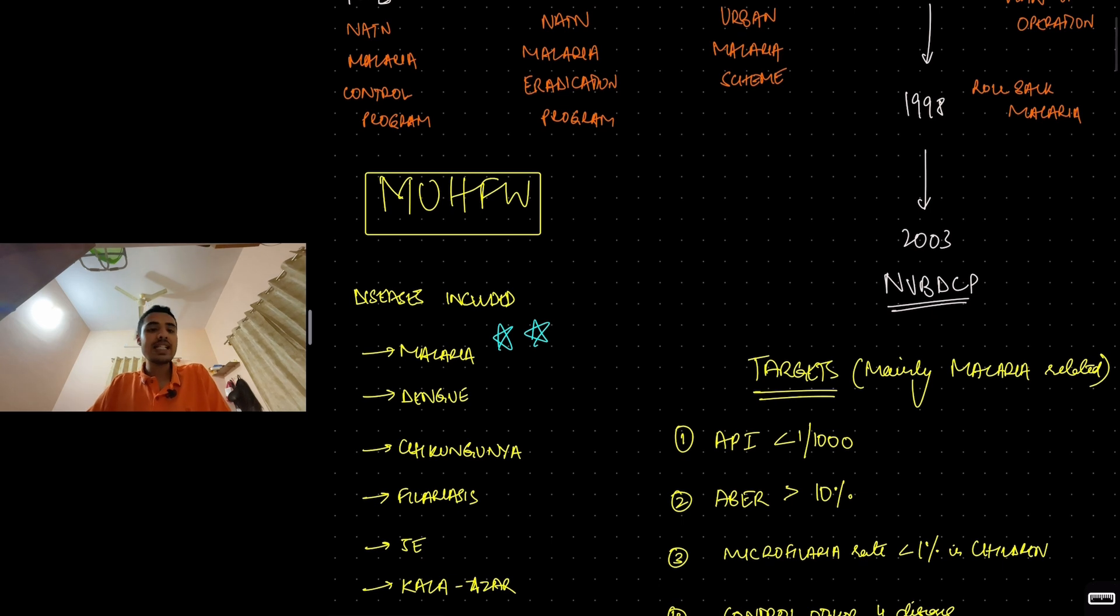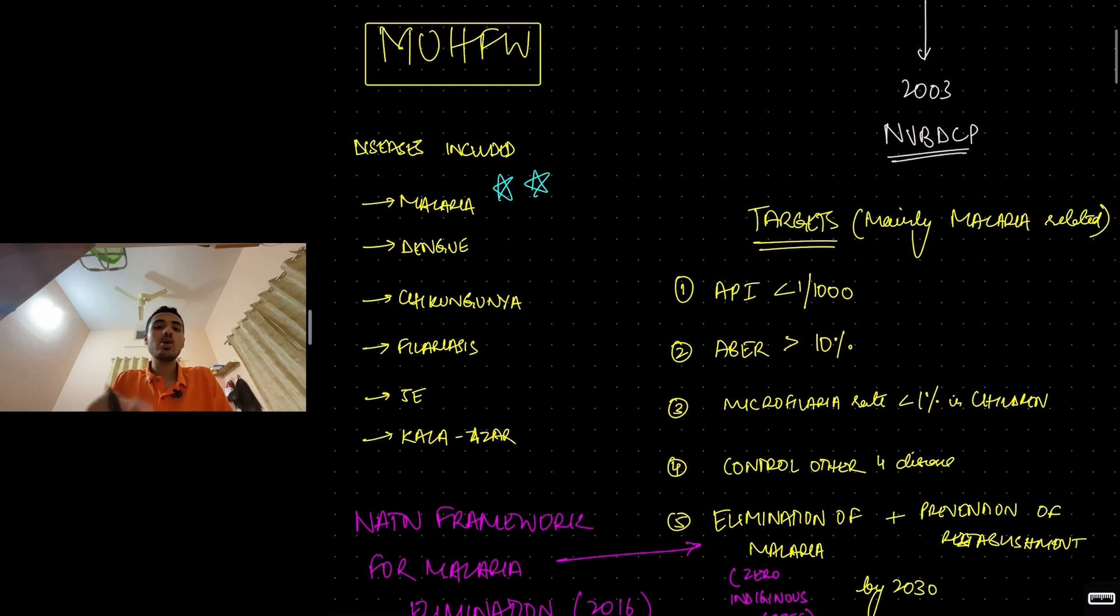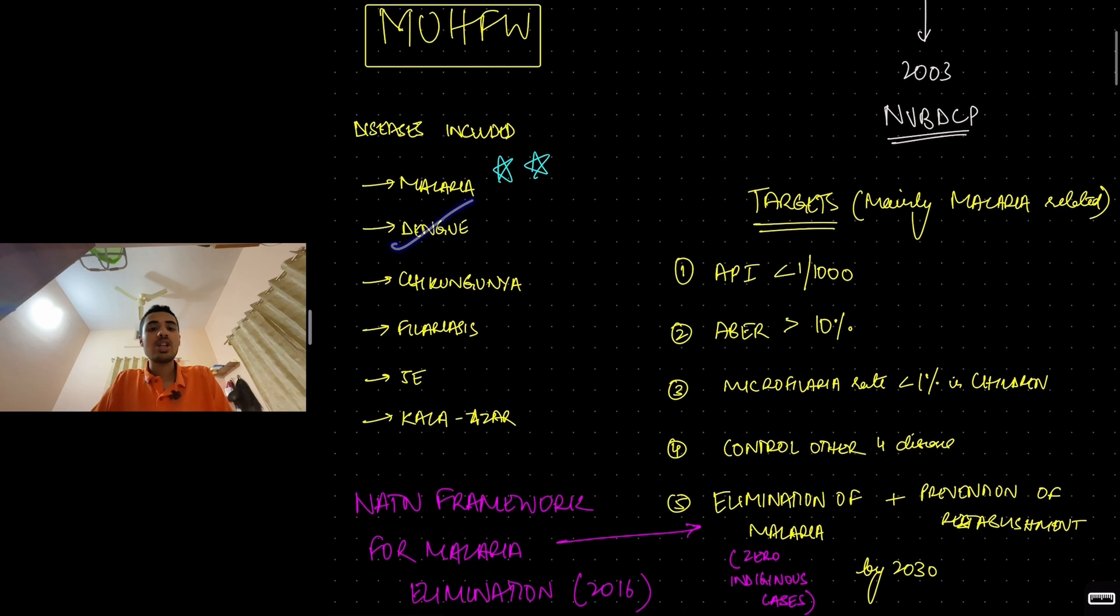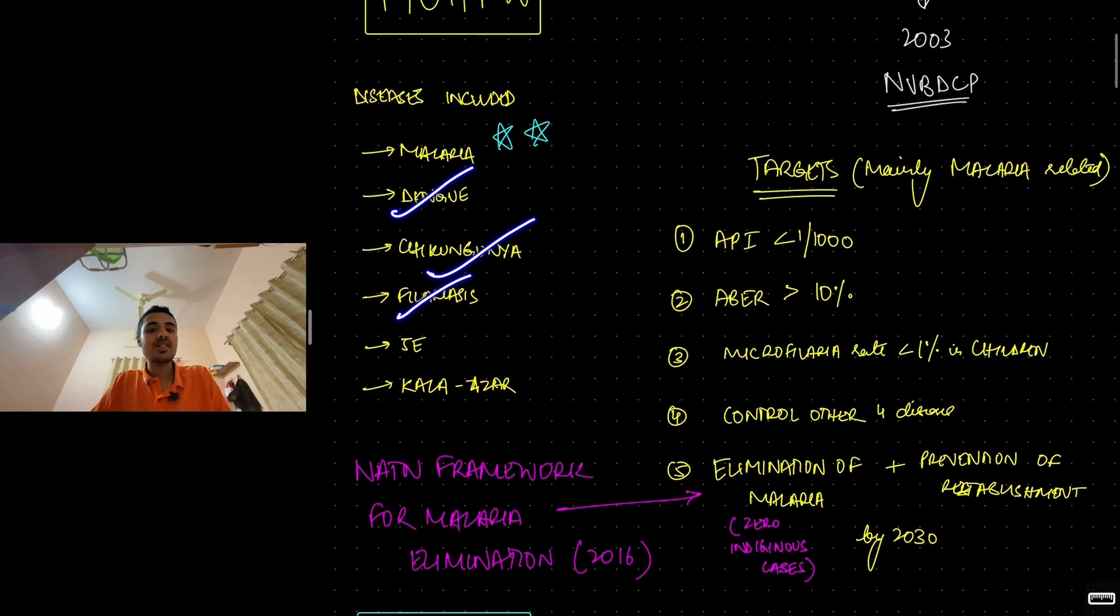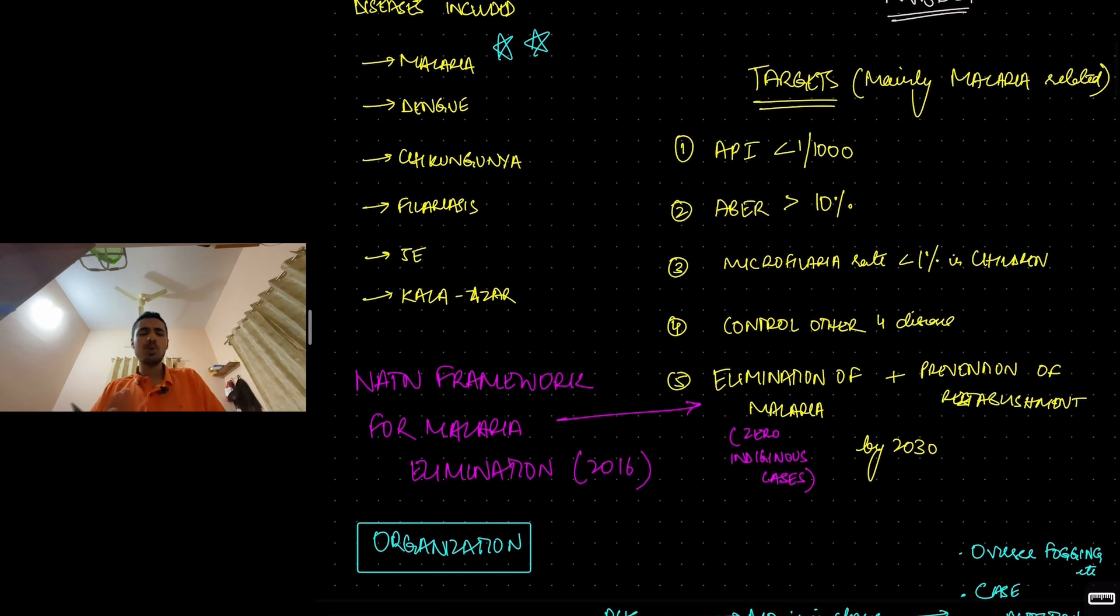What are the diseases included? Not just malaria. It also includes Dengue, Chikungunya, Filariasis, Japanese Encephalitis, and Kala-azar. Now, these five are spread through mosquito. Kala-azar is through sand fly. So different vectors. Remember, not all of them under the program are mosquito. What are the targets? Mainly, this program was for malaria, so the targets are related to malaria.